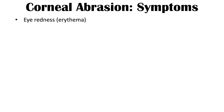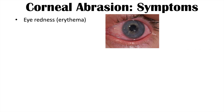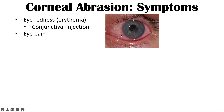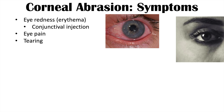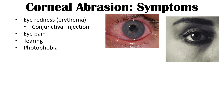The signs and symptoms of corneal abrasions include eye redness or erythema, often with conjunctival injection — a dilation of conjunctival vessels. Eye pain is also very common. Tearing can occur, especially in patients who don't have conditions causing reduced tear production. Photophobia, or sensitivity to light, is also very common with a corneal abrasion, so the affected eye can experience pain, tearing, and light sensitivity.